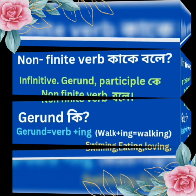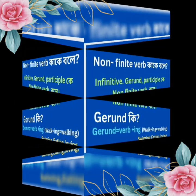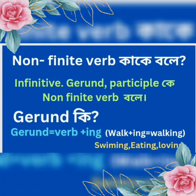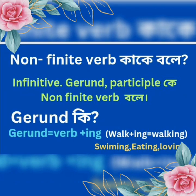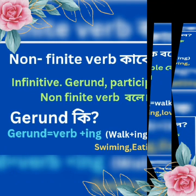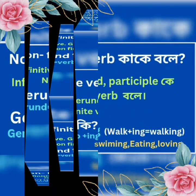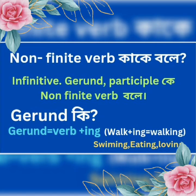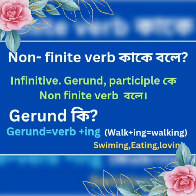Gerund equals verb plus -ing. Gerund means a verb with -ing added to it — for example, walking, swimming, eating, loving, etc. That is gerund. A verb in its present form with -ing added is gerund.